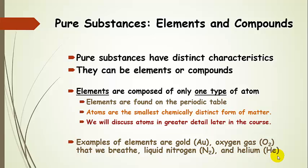So pure substances — let's talk about elements and compounds first and the differences between those. If something is a pure substance, that means it has distinct characteristics, and every single sample of it has those characteristics. Pure substances can be elements or compounds — it doesn't have to be a pure element to be a pure substance. Elements are composed of only one type of atom, and they're all found on the periodic table. Atoms are the smallest chemically distinct form of matter. We'll discuss atoms in greater detail later in the course.